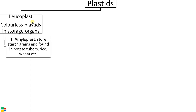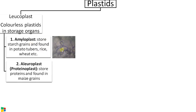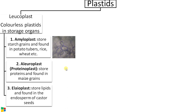There are three types of leukoplast. The first is amyloplast — 'amylo' means starch — storing starch grains, found in potato tubers, rice, etc. The second is aleuroplast, associated with protein storage, found in maize grains. The third is elaioplast, storing lipids, found in the endosperm of castor seeds and many other seeds.